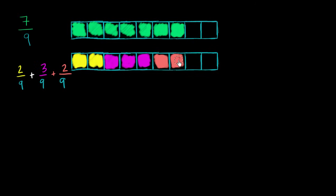So notice, when I added 2/9 to 3/9 to 2/9, this equals 7/9. And we know that when we add a bunch of fractions like this that have the same denominator, we can just add the numerators. And this is why. 2/9 plus 3/9 plus 2/9 is going to give me 7/9.